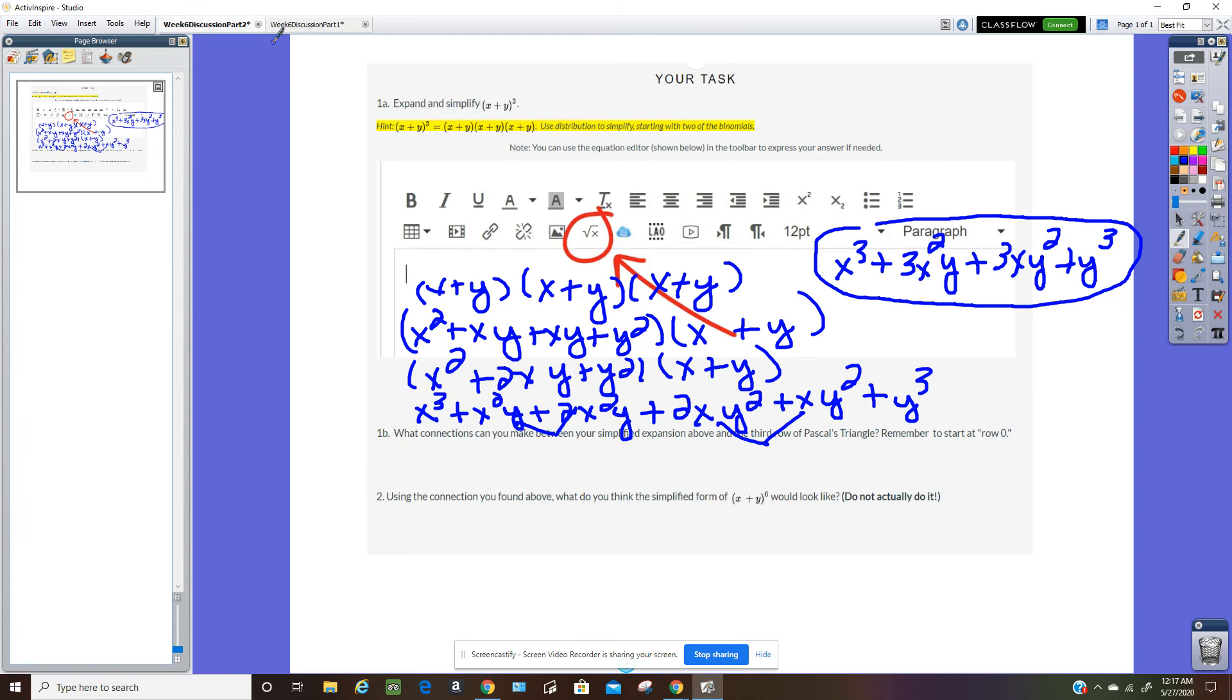Going back here is 1, 3, 3, 1. It's the coefficients of each of these terms here. That's how these are connected. The coefficients of each term is the same as the third row.